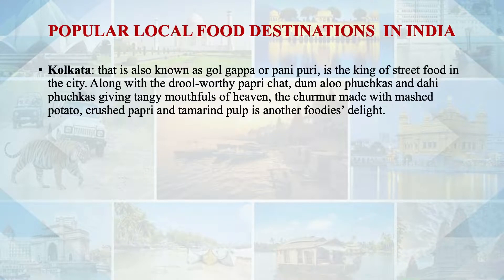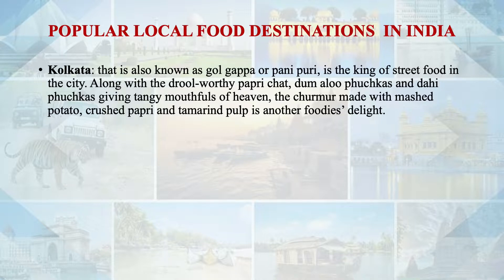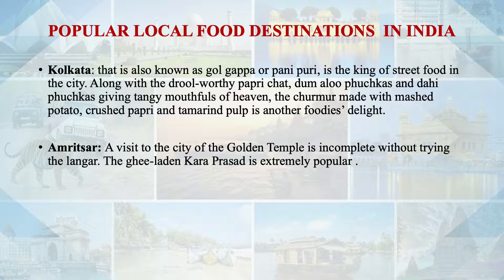After understanding the dynamics of Indian food, let us now learn about local food destinations in India. Let me take you to Kolkata. Puchka, also known as Golgappa or Pani Puri, is the king of street food in the city. Papri chaat, Dammalu, Puchka and Dahi Puchka are very popular among travelers along with churmur made up of mashed potato and crushed papri, which is another delight for tourists.